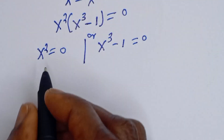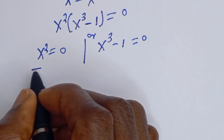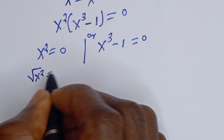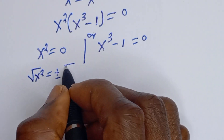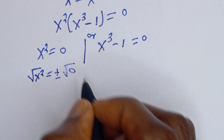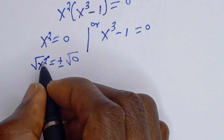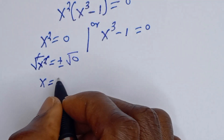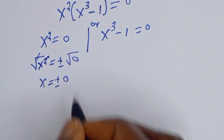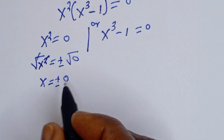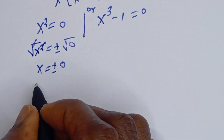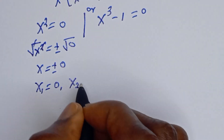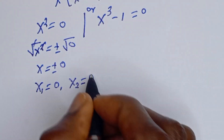Now let's consider the first case. If we take the square root of both sides, square root of S squared is equal to plus or minus square root of 0. This cancels, so S is equal to plus or minus 0, which is the same as 0. Therefore S1 is equal to 0 and S2 is equal to 0.